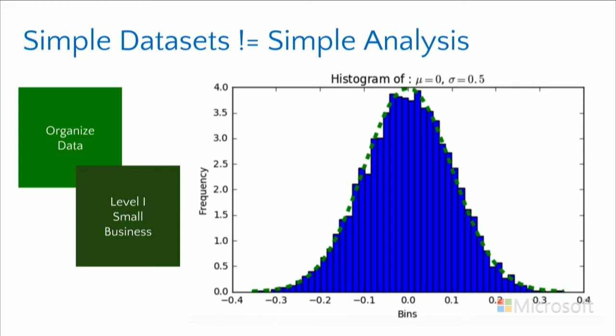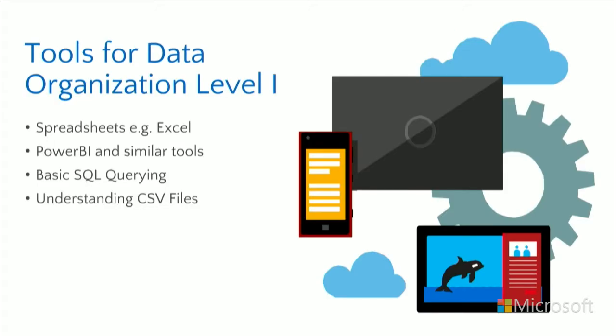Having a simple data set doesn't mean analysis is automatically simple — small data sets can actually be harder to analyze in some ways because you don't have enough data points to really understand what's going on. As a level one data organization scientist, you want to be able to use spreadsheets like Excel, Power BI, understand basic SQL querying, and know different tabular data formats like CSV — comma-separated value files, where an enter creates a new row and commas separate each column.